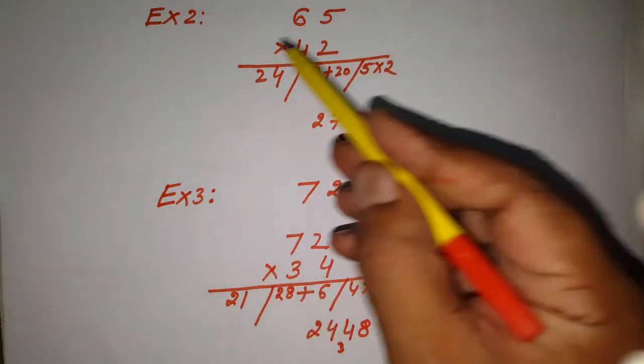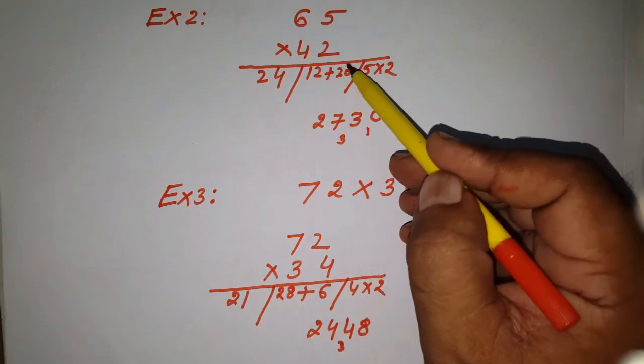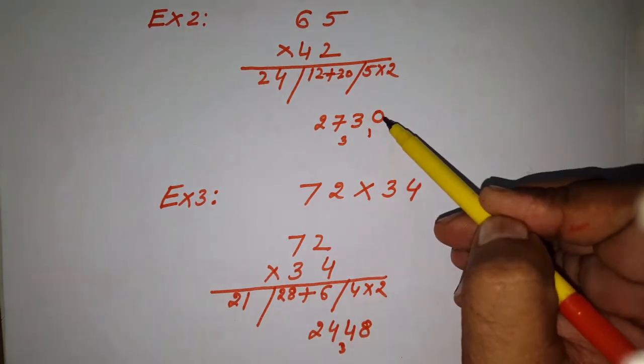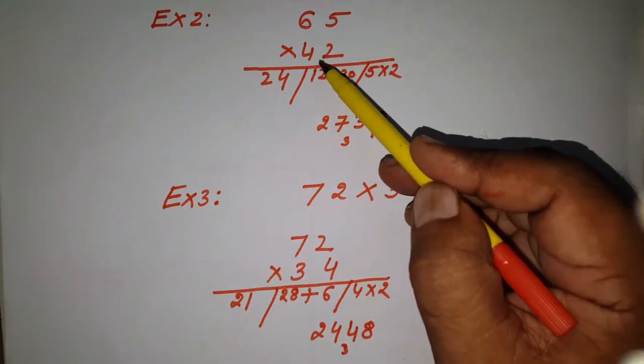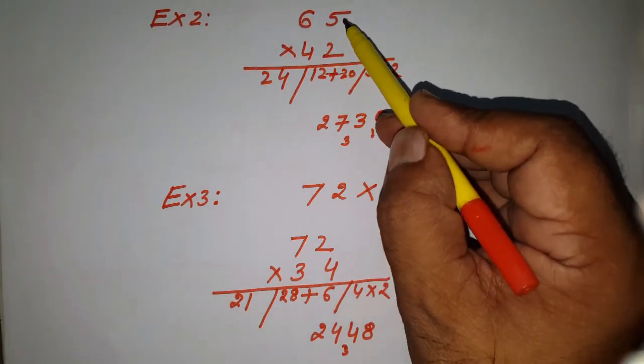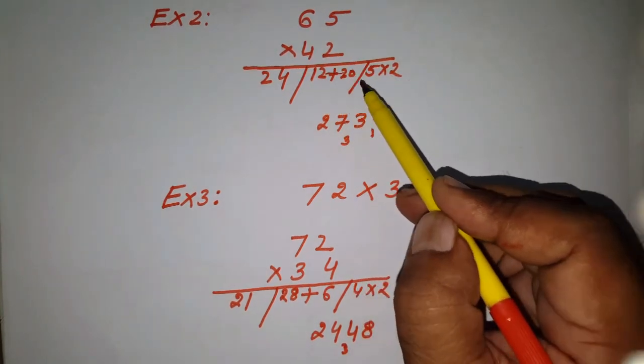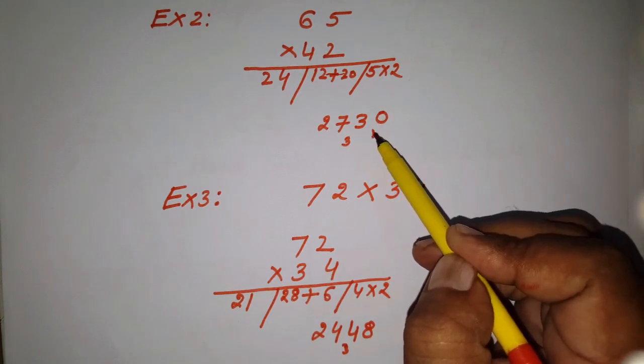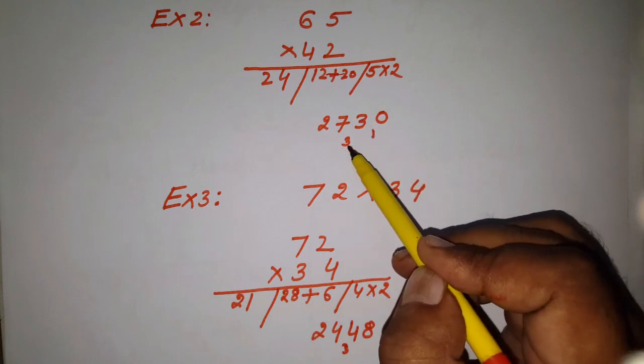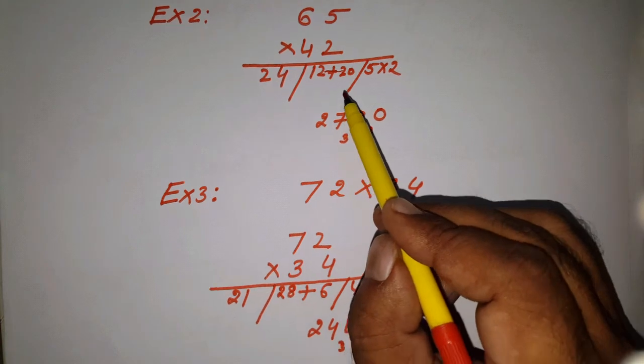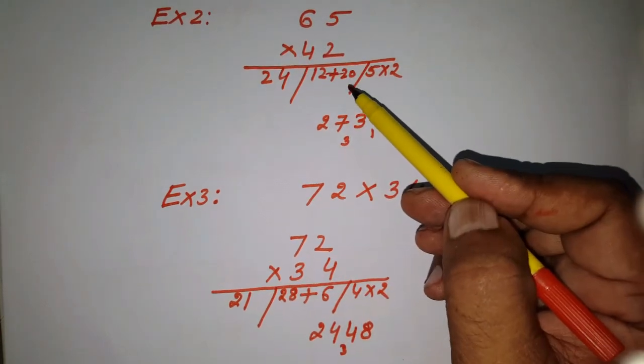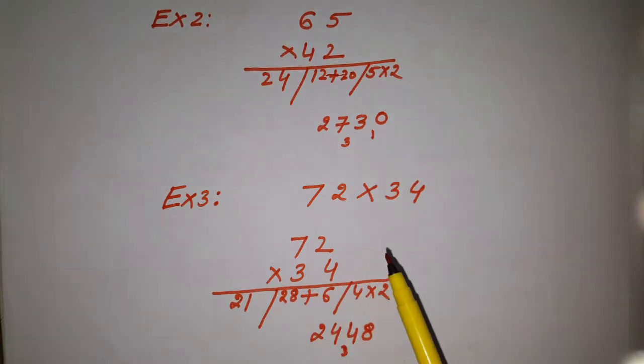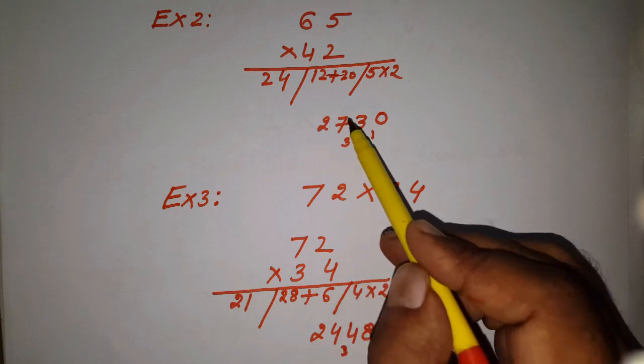Example 2: 65 times 42. Vertical: 5 times 2 equals 10. Second step crosswise multiply: 6 times 2 equals 12, and 5 times 4 equals 20. Twelve plus twenty equals 32, but we have 1 carry, so 32 plus 1 equals 33. Third step: 6 times 4 equals 24. Twenty-four plus 3 carry equals 27. So we have 2, 7, 3, 0.